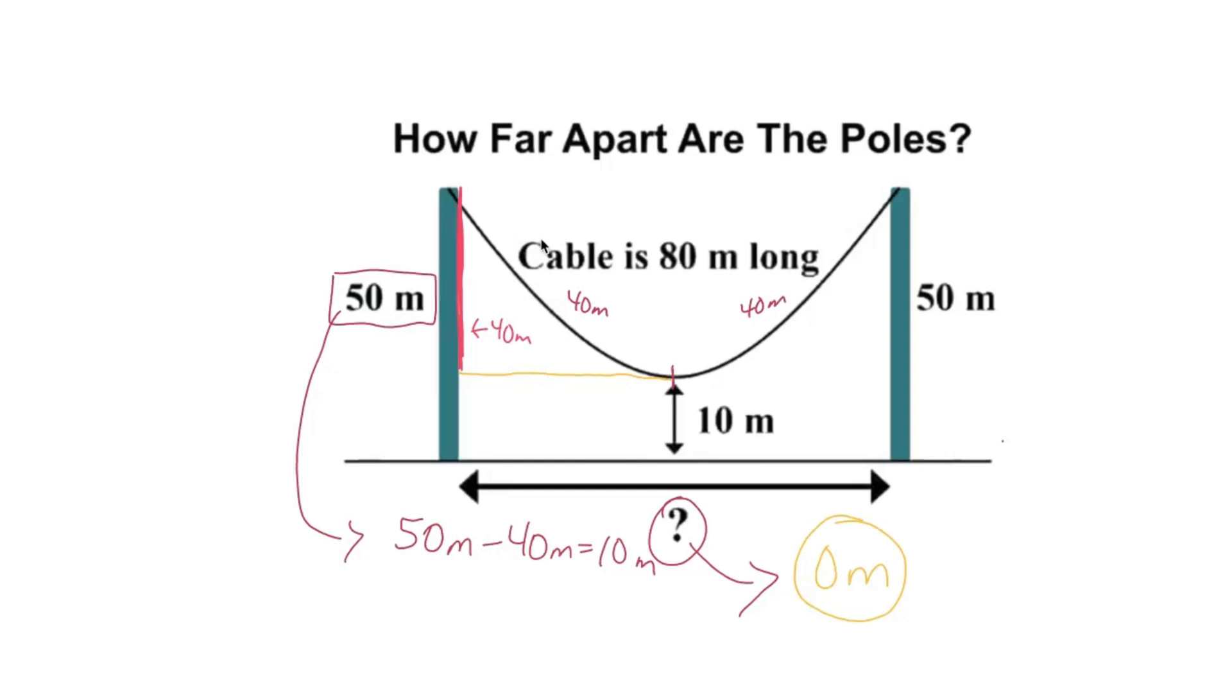We know 50 meters minus 40 meters is just 10 meters. And because the problem gives us that from the bottom of that cable to the ground is 10 meters, we know 10 meters plus 40 meters equals 50 meters.